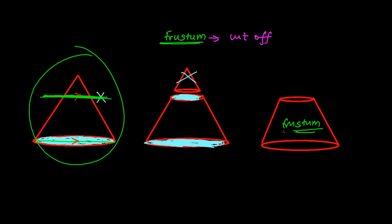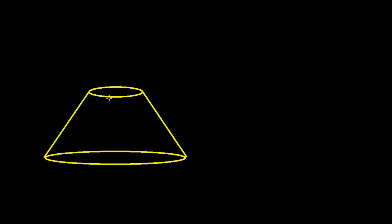To find the volume of this frustum, let me draw a figure. Here is the frustum of height h, where the radius of the lower circle is r1, the radius of the upper circle is r2, and the slanted height is l.